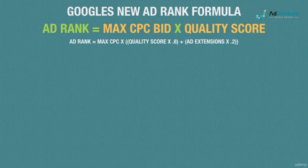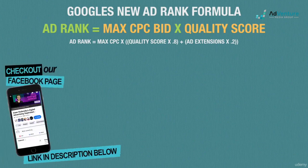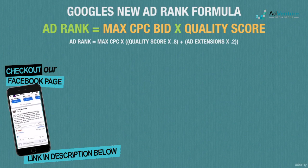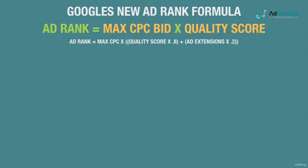We don't know exactly how the ad rank formula changed to accommodate the ad extension factors. Brad Geddes of Certify Knowledge proposes that ad extensions account for about 20% of the quality score portion of the current ad rank formula. Whether or not that number is precisely accurate, we can be confident it's not much more than that. Because ad extensions are a relatively small factor, we'll continue evaluating examples with the primary formula: ad rank equals max CPC bid times quality score.